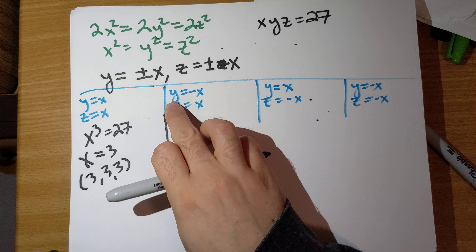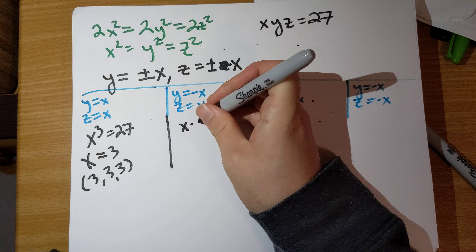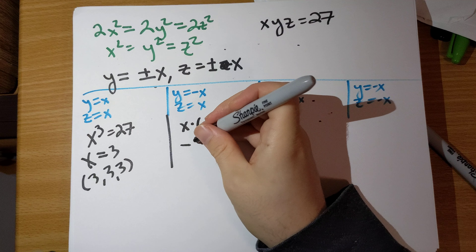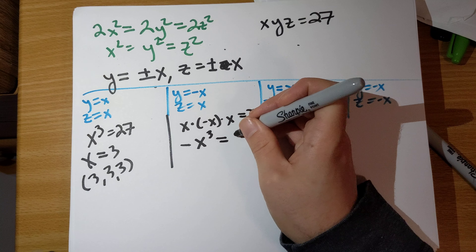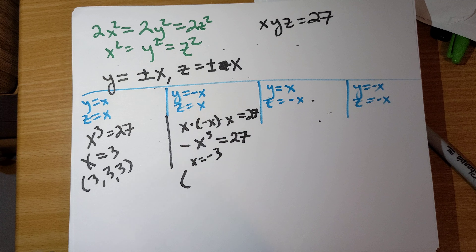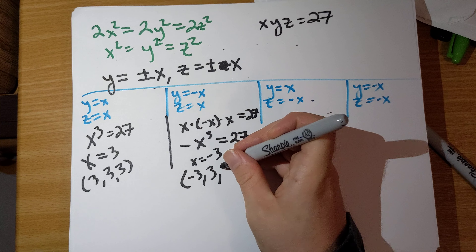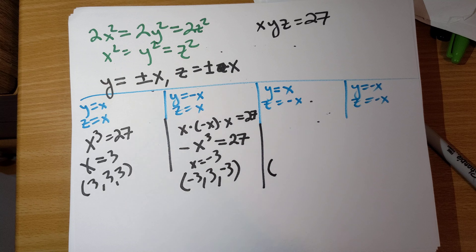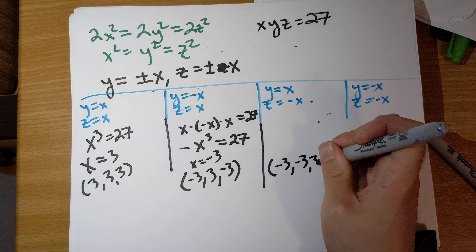These right sides are all literally the same exact quantity. So this tells us that 2x² = 2y² = 2z², or equivalently x² = y² = z². And don't forget, we also know that xyz must equal 27.